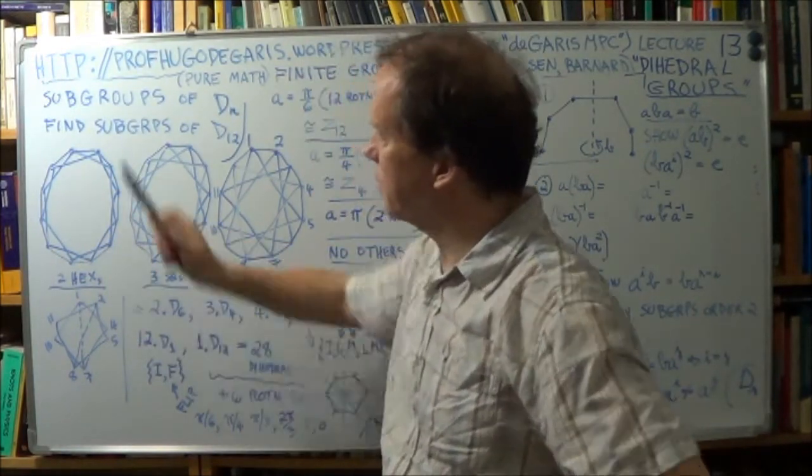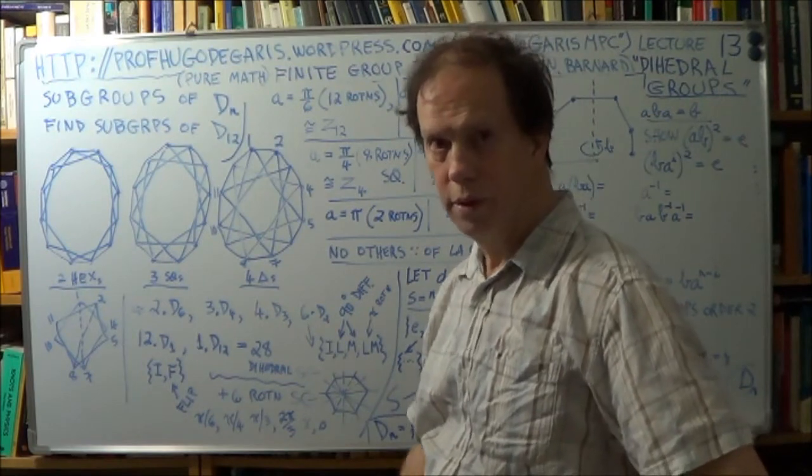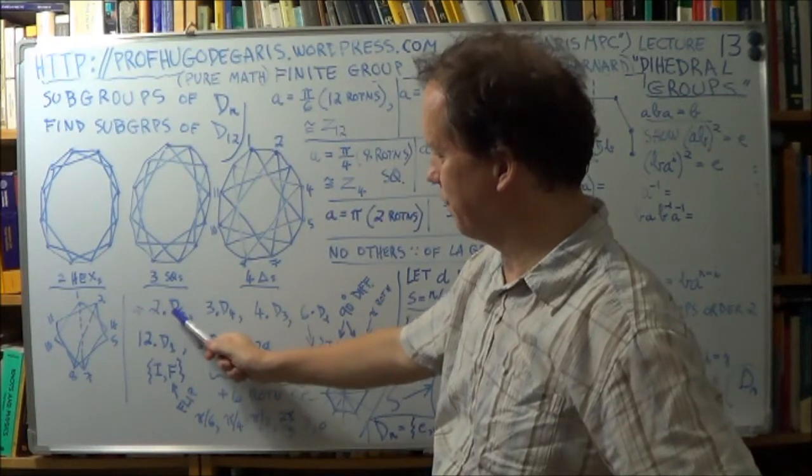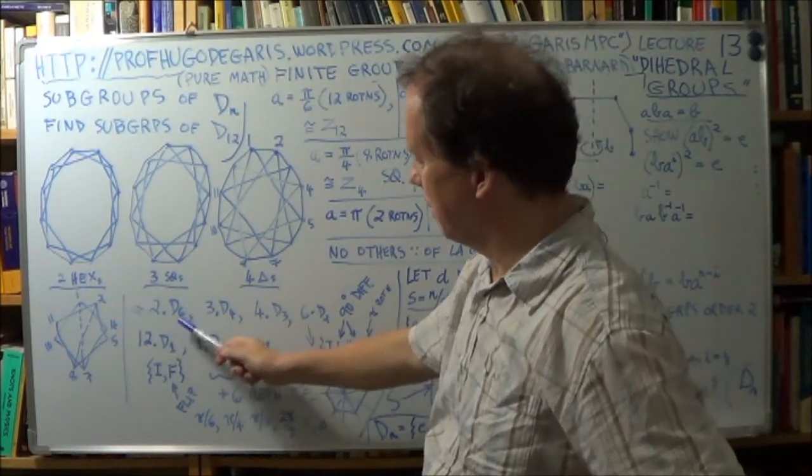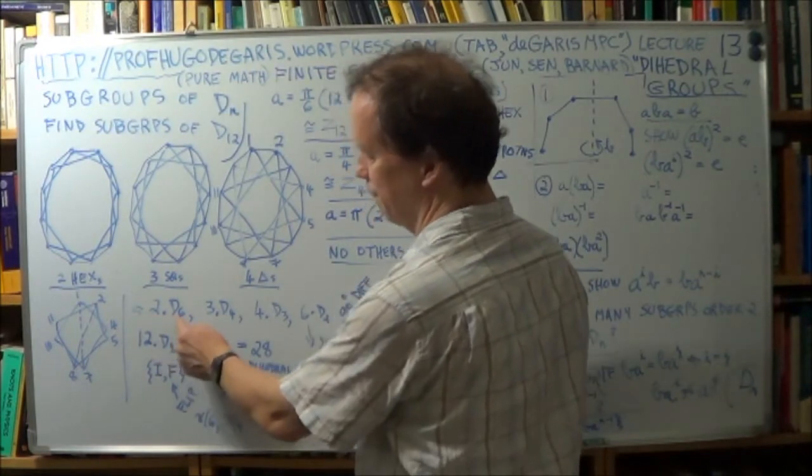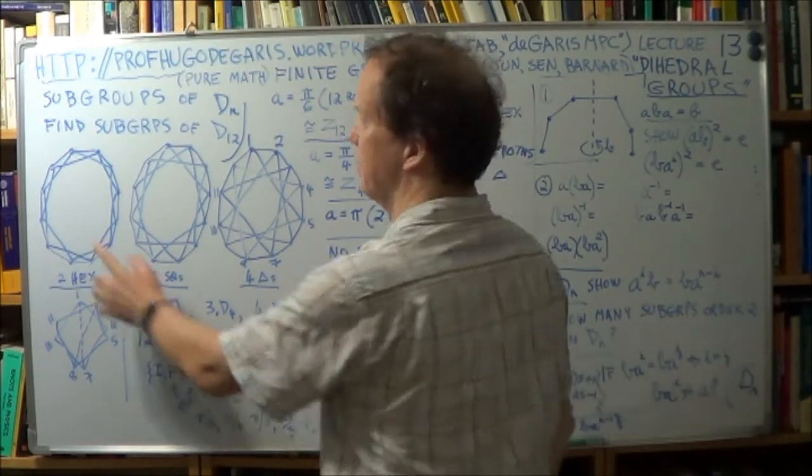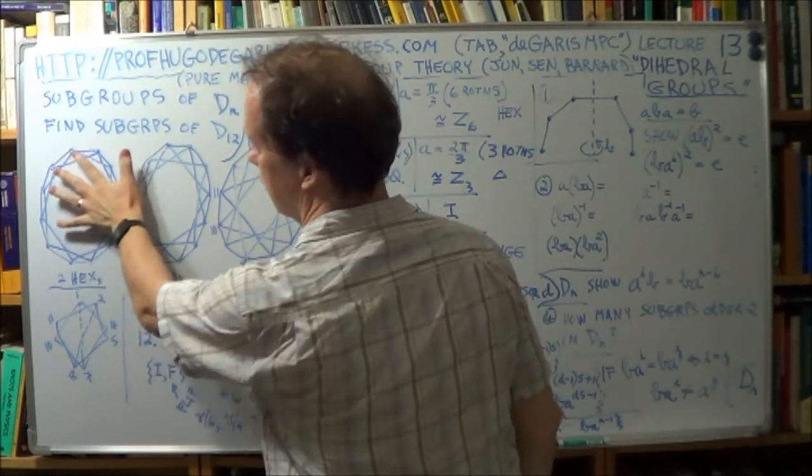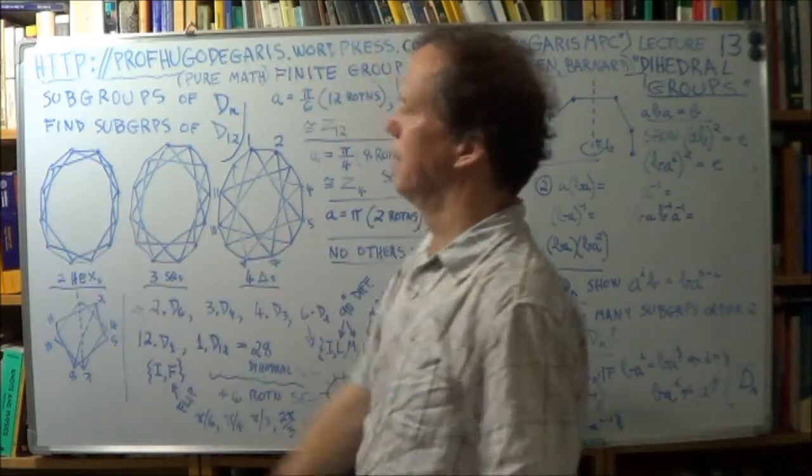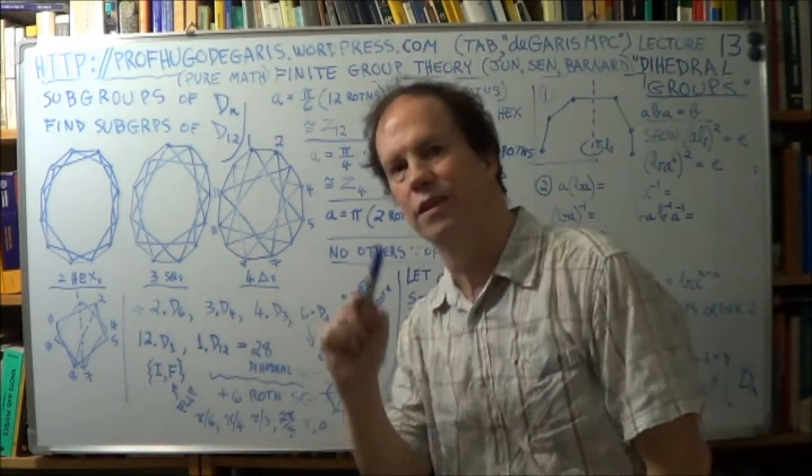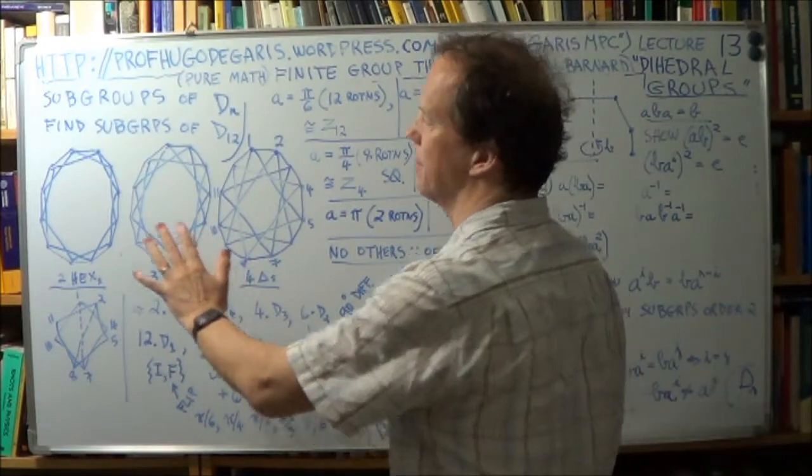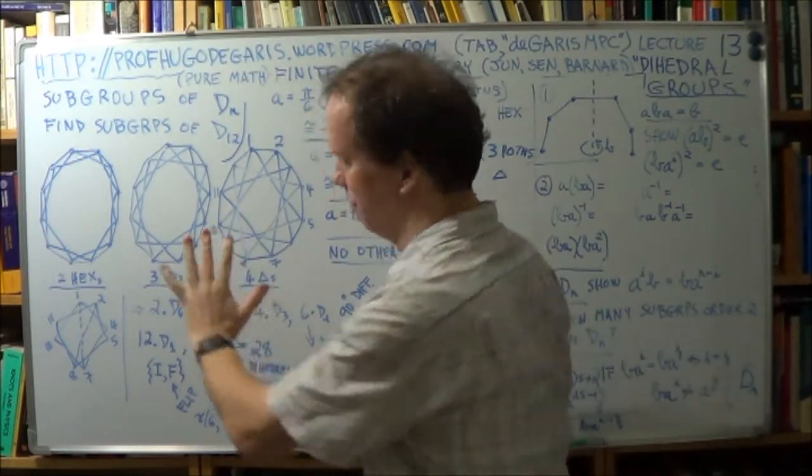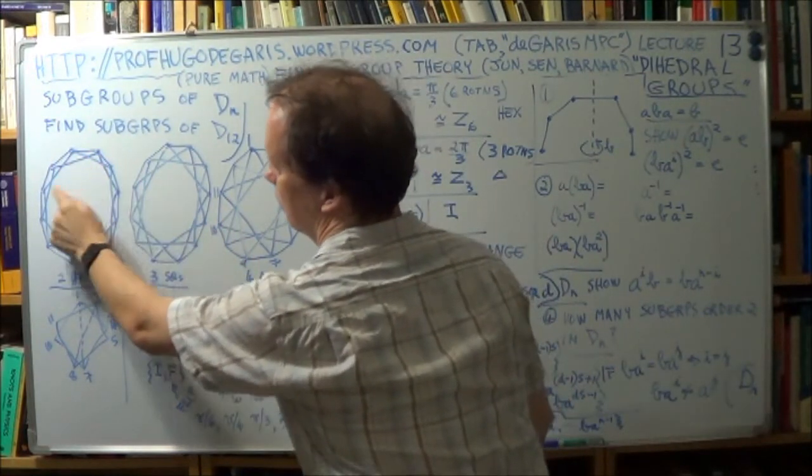Now, each of those hexagons corresponds to a subgroup. You've got a D6, because you can put two of these hexagons into this duodecagon. One of them like this, and the next one rotated one side, one A, if you like. Remember A's clockwise rotation by, effectively, the angle that gives you one side, just one side rotation.